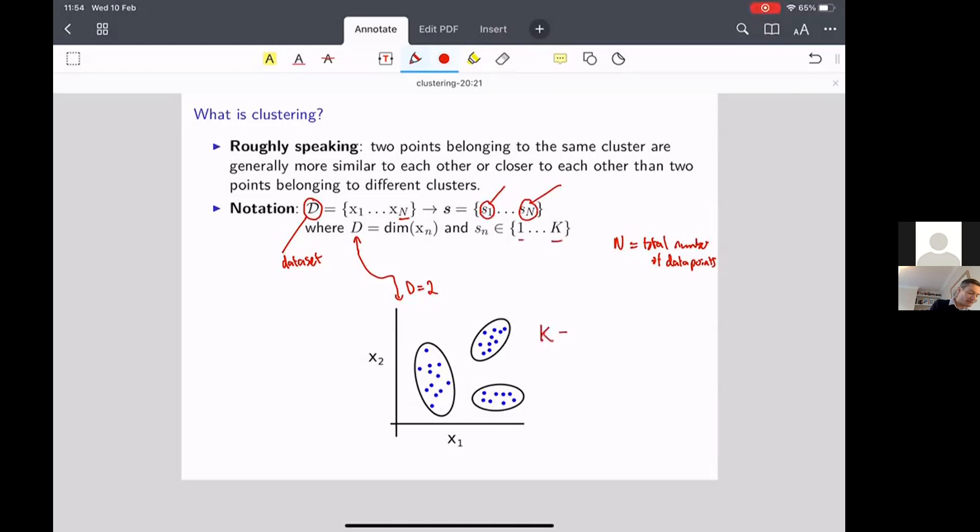So these are going to be discrete valued quantities that take values one through to big K. So down below here, big K was the number of clusters equal to three. Everyone in this example had s set to one, everyone in this cluster had s equals two, and everyone in this cluster had s set equal to three. So there are n scalars that take the discrete values which indicate which cluster we come from.